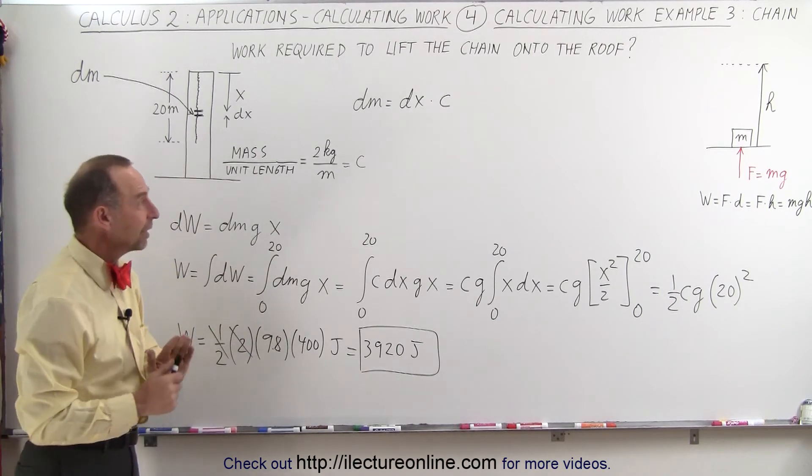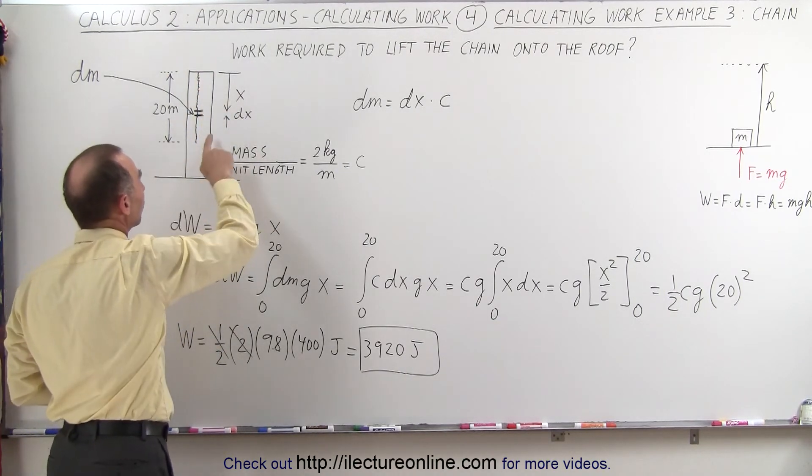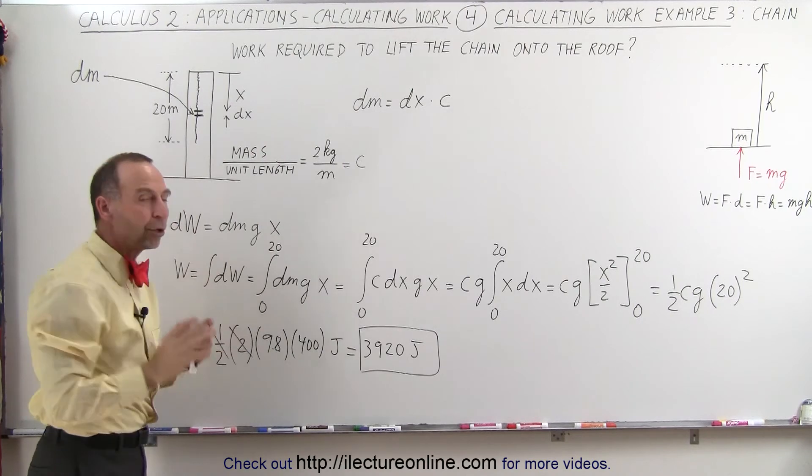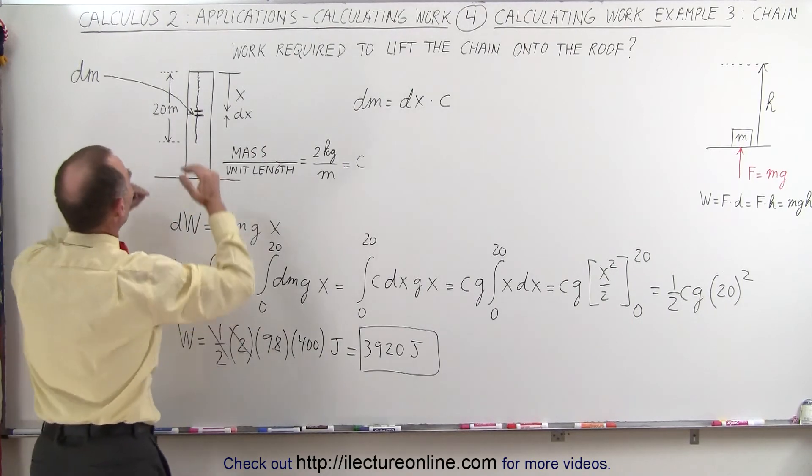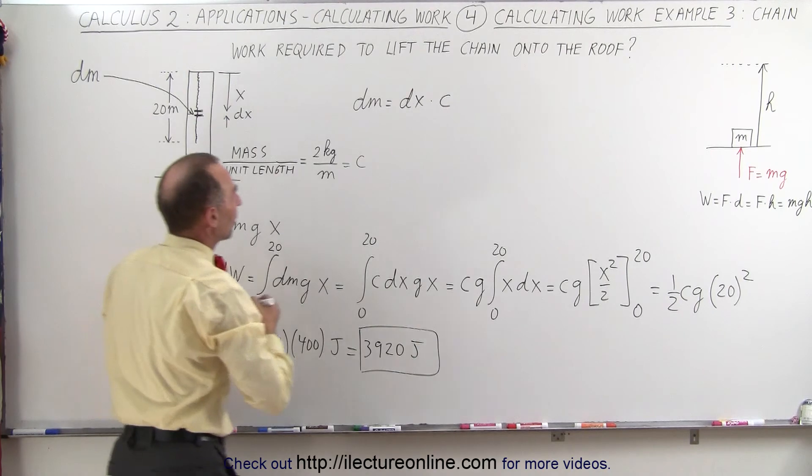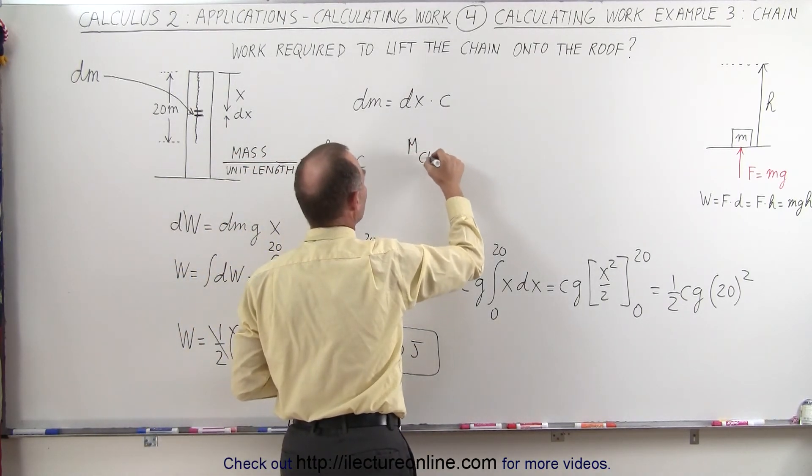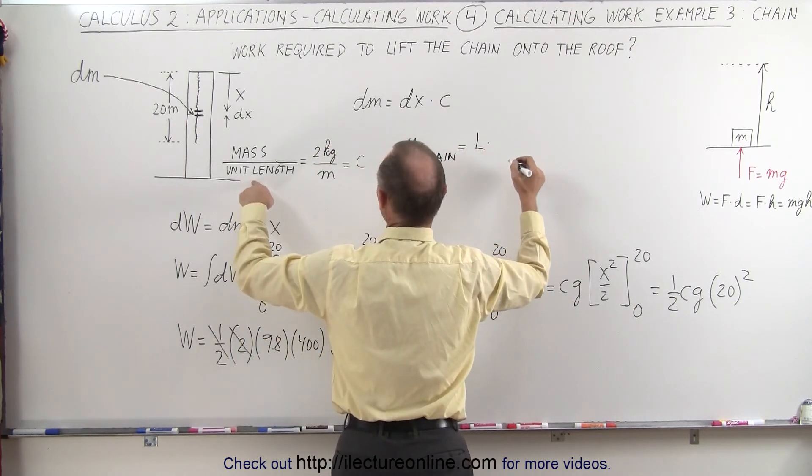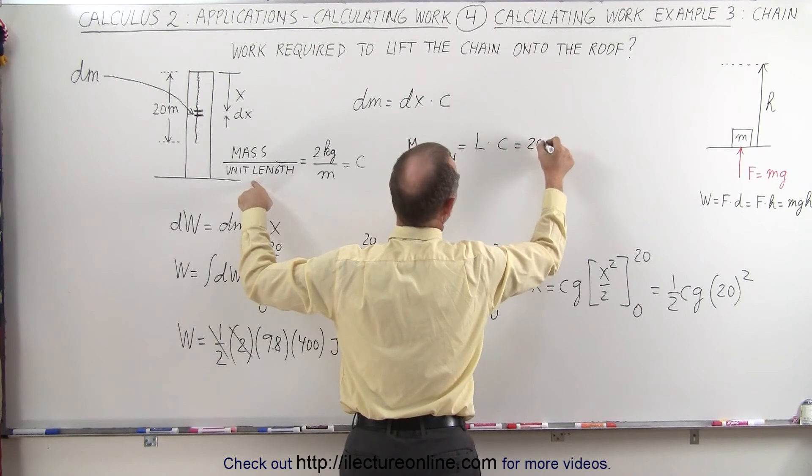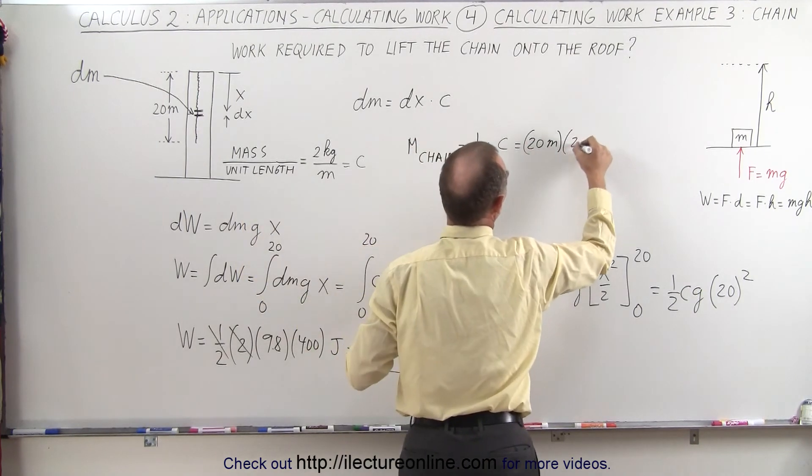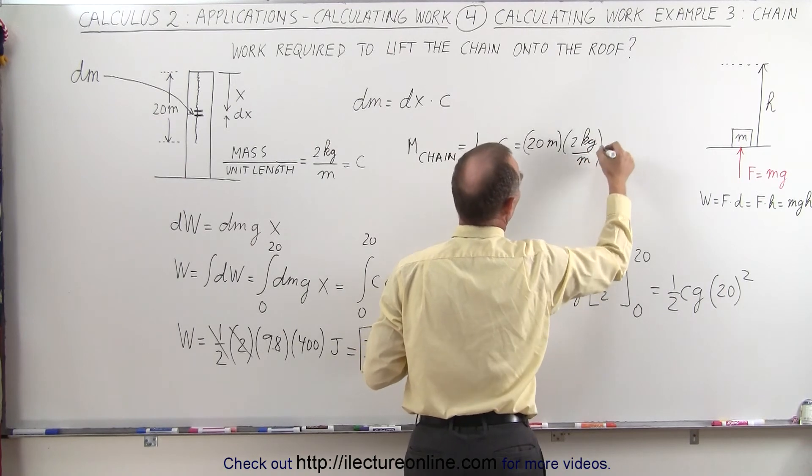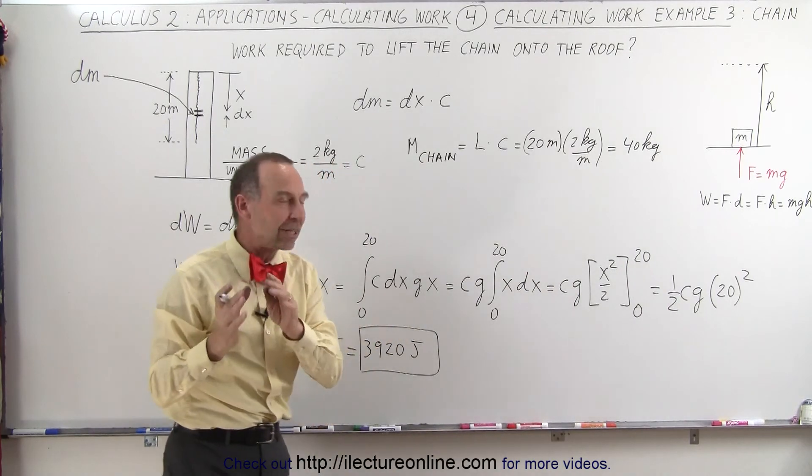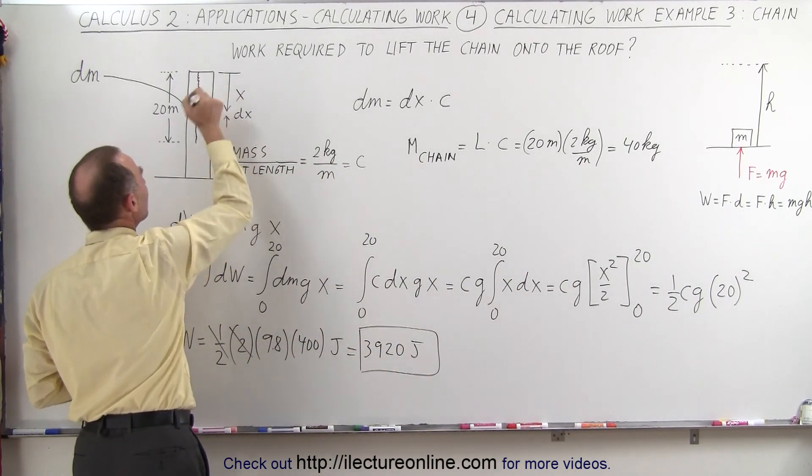Now to show you that since this is a linear relationship, notice that the amount of work done is linearly proportional to the distance away from the top of the roof. What we could have imagined is, well what if all of that mass of the entire chain, so let's get the total mass. M of the chain is equal to the length of the chain times the mass per unit length times c, which is 20 meters times 2 kilograms per meter, which is equal to 40 kilograms. Now what if that entire mass of that chain had been at the halfway point, 10 meters down?